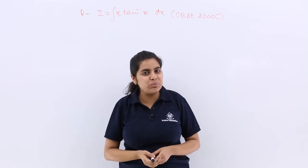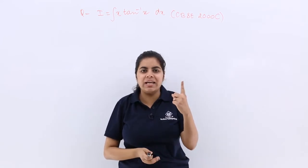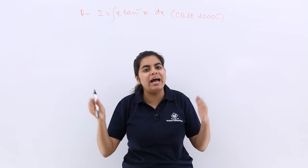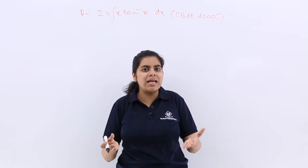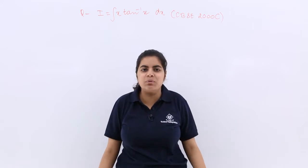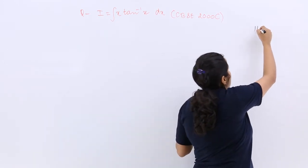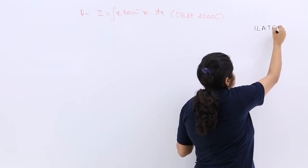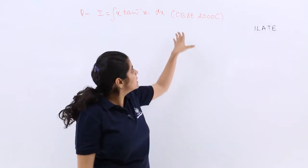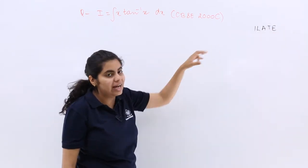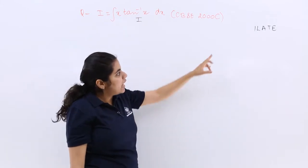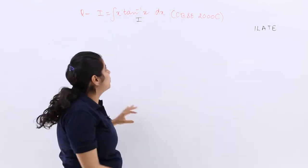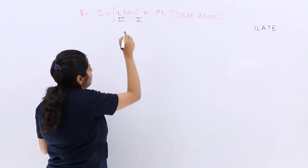Now you know that it is an algebraic and inverse trigonometric product, and in this type of question integration by parts works well. You have to follow ILATE, and since tan inverse x is an inverse trigonometric function, ILATE says it should be the first function and x should be the second.